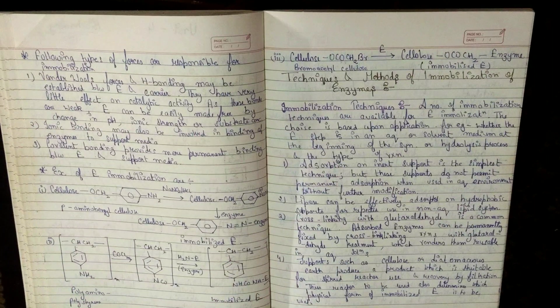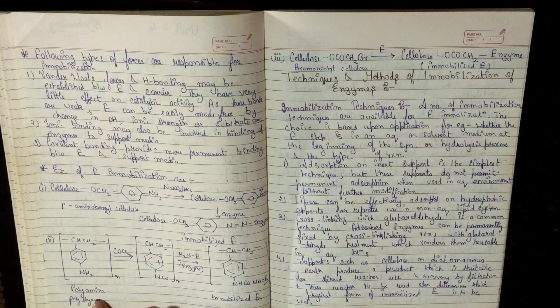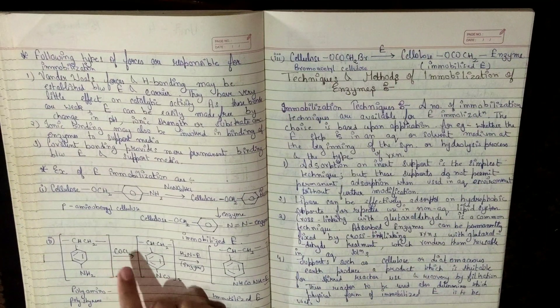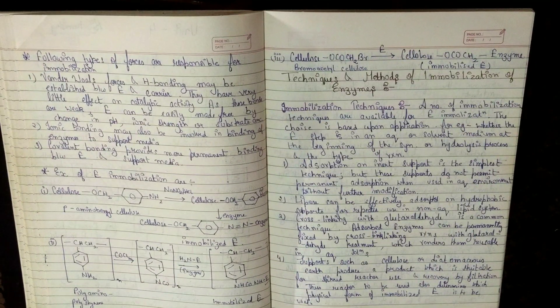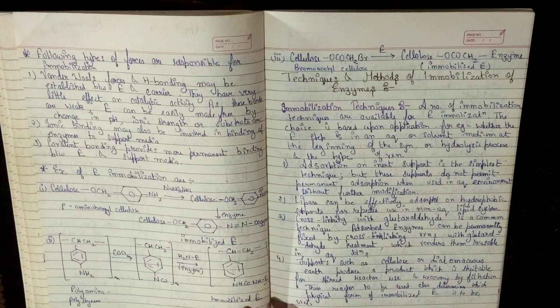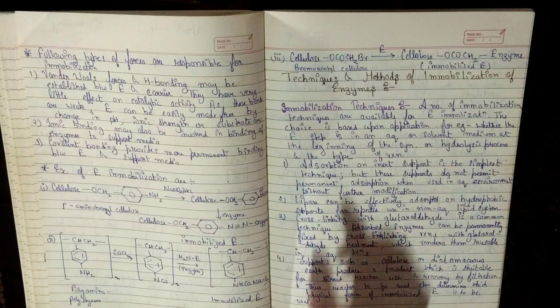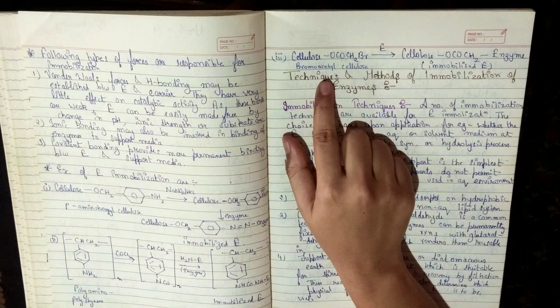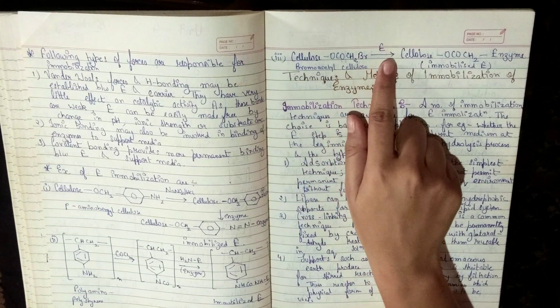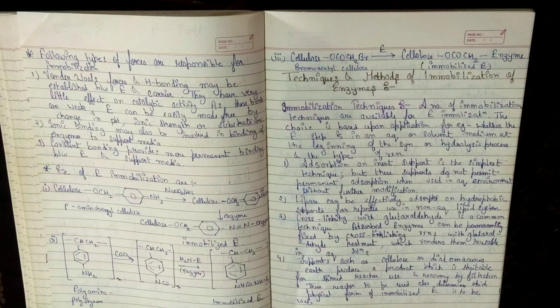Our second example is of polyamino-polystyrene. It will react with COCl2 to give us isocyanate derivative which on further reaction with enzyme will give us the immobilized enzyme. Our third example is of bromoacetyl cellulose which directly react with enzyme to give us the immobilized enzyme.